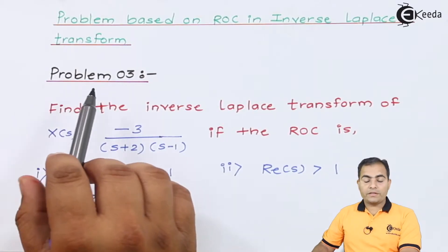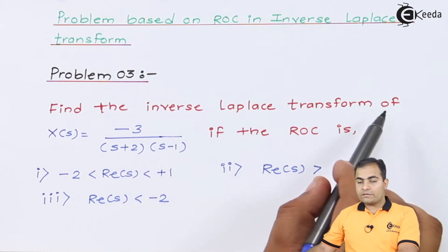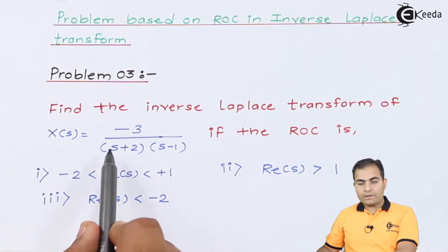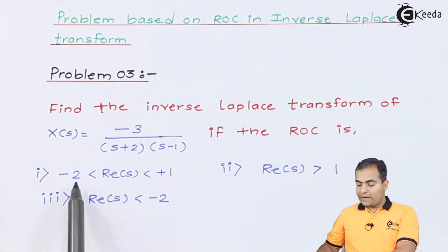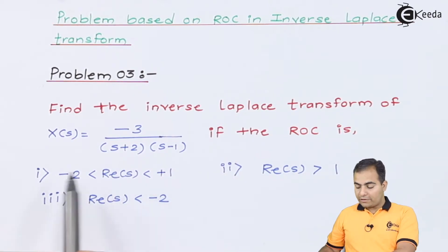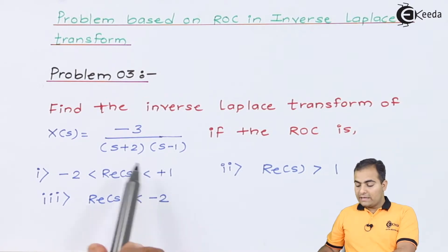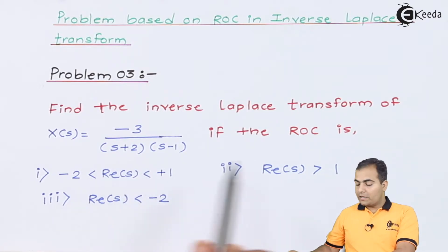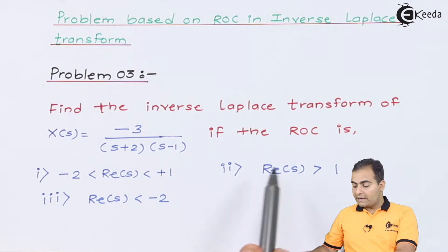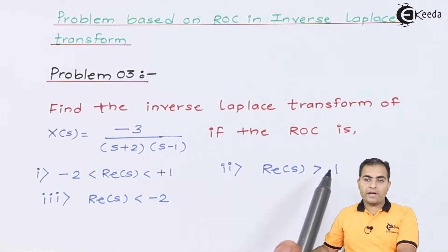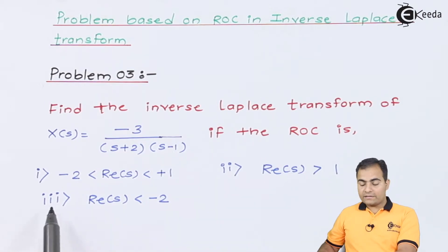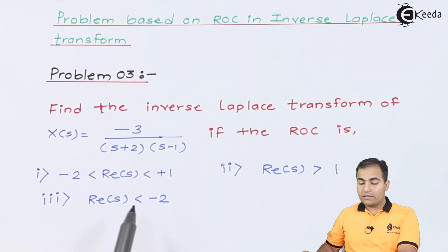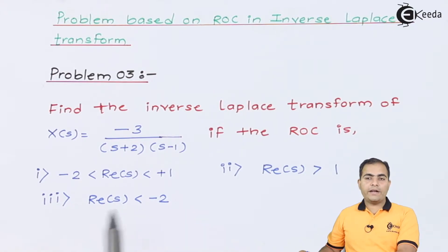In problem number 3, find the inverse Laplace transform of the function X(s) = -3 / [(s+2)(s-1)]. The three ROC cases are: Case 1, ROC is -2 < Re(s) < 1, which is a two-sided ROC. Case 2, Re(s) > 1, which is a right-handed or causal ROC. Case 3, Re(s) < -2, which is a left-handed, non-causal or anti-causal ROC.